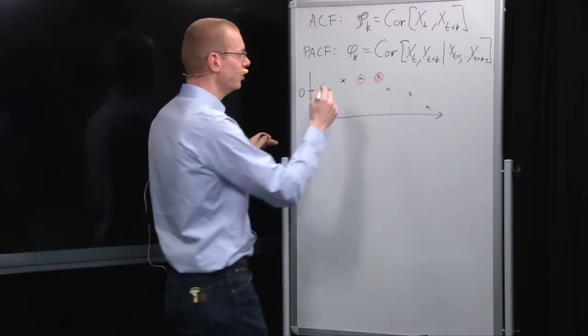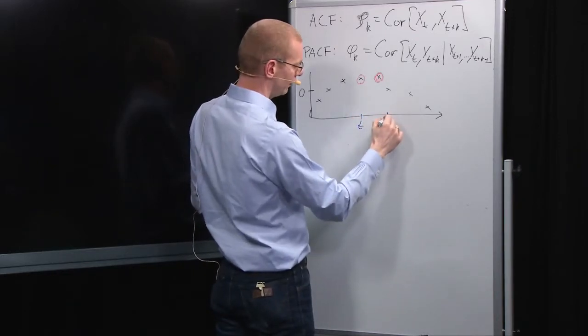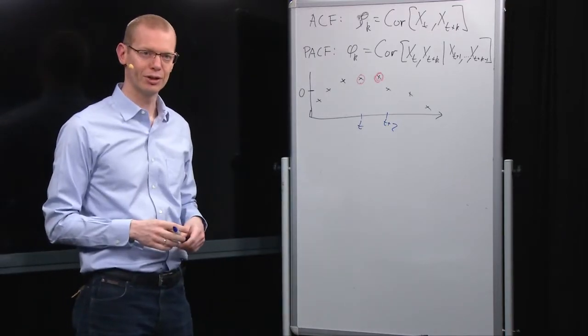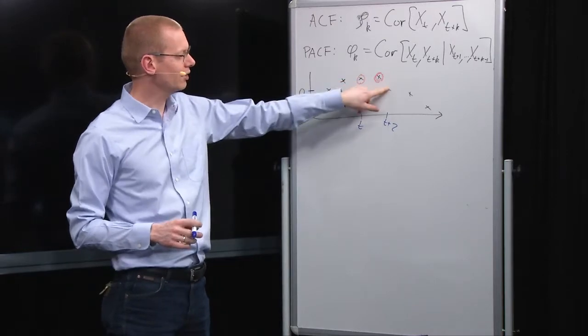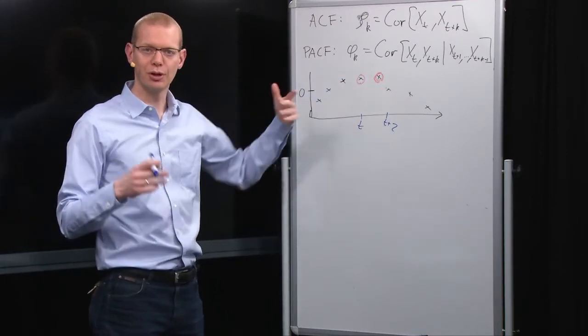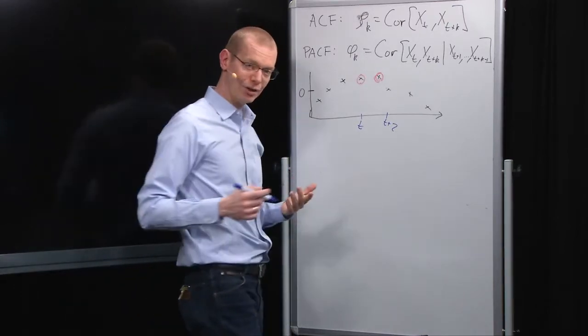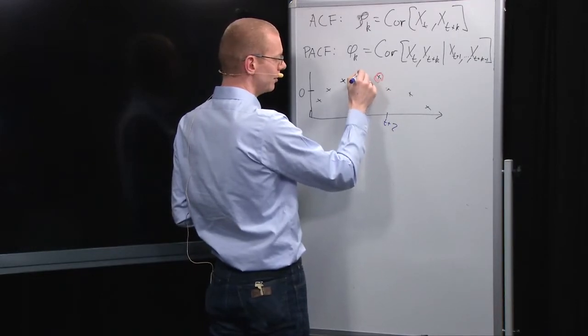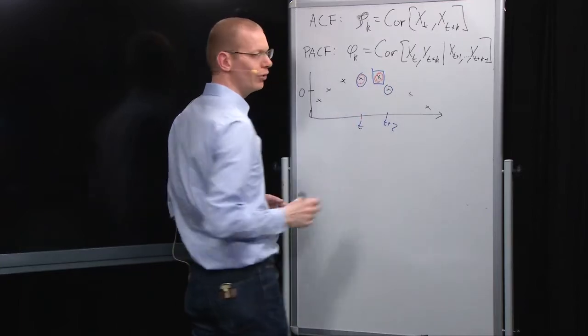Now if you go to, say, what is the partial autocorrelation function - say this is time t and this is t plus 2 - what is the partial autocorrelation function? First, the autocorrelation function again, well there's a large correlation between the two, so the autocorrelation may again be large, but the partial autocorrelation function is saying, well what happens from here to there when we know this?